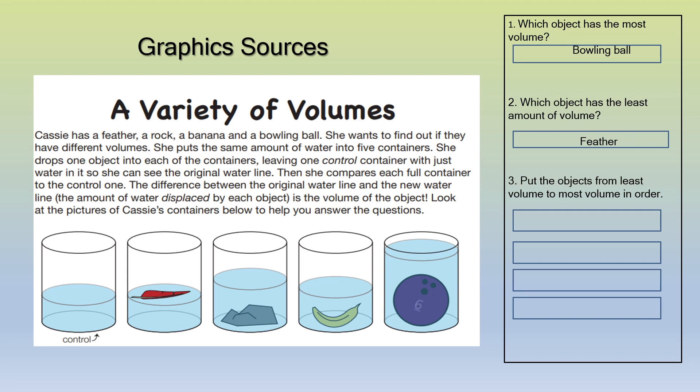Question number three: put the objects from least volume to most volume in order. The feather, the banana, the rock, and the bowling ball. Very good. Give your neighbor a high five for me.